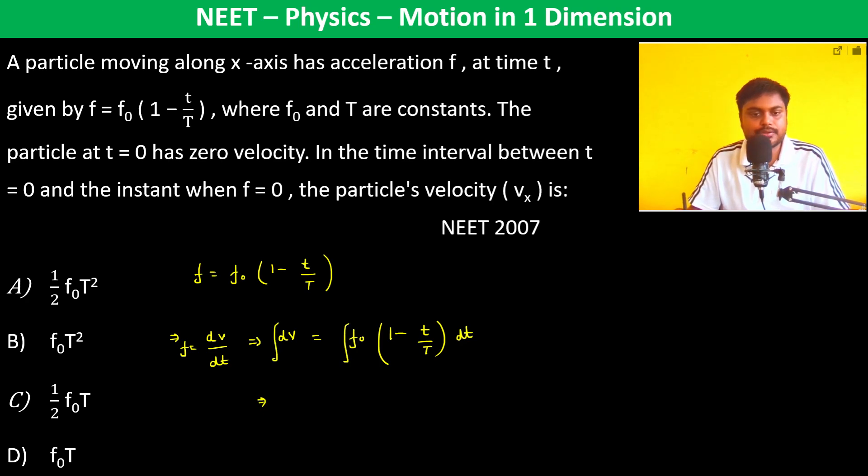Now at time t equal to zero, velocity is zero, so at time t equals T, velocity is—you can find out by the integration—f₀t minus t square by 2T. So this is the velocity which is there at time t.